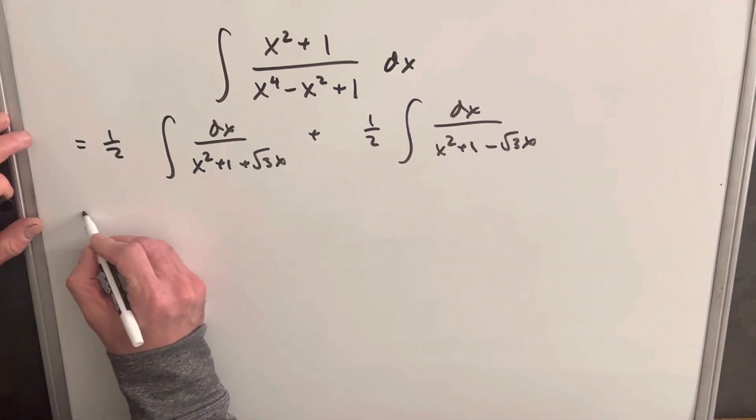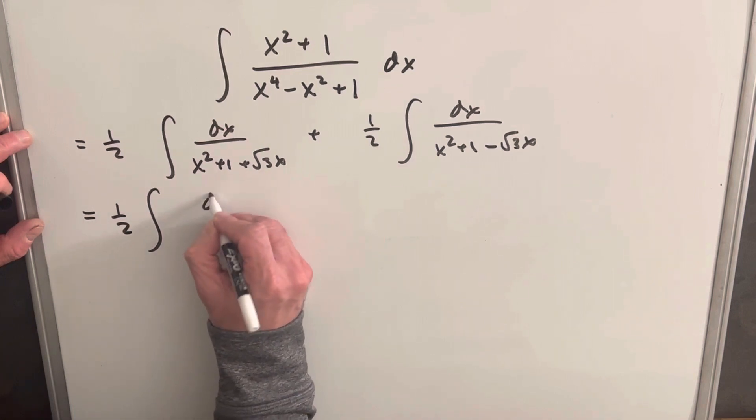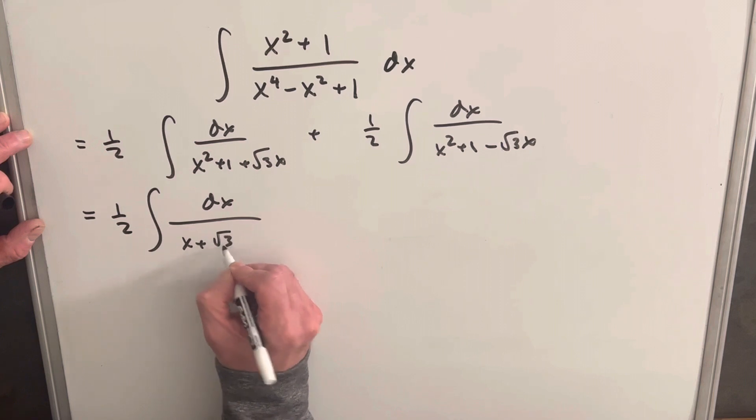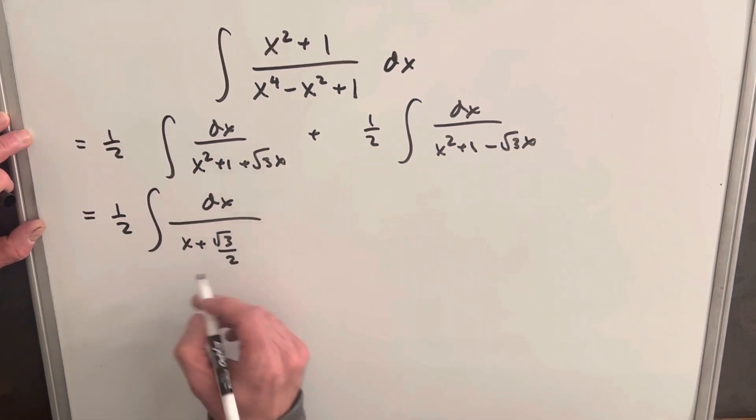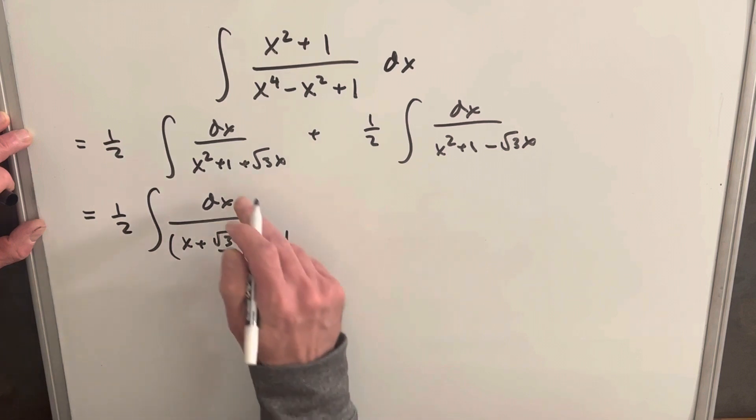So from here, what I'm going to do is I'm going to complete the square on each of these integrals. So for this one, I'm going to write this as x plus square root of 3 over 2. I'm just taking a half, divide by 2 there. Square this, so that's going to be x squared plus square root of 3x plus 3 fourths. And we square this last term, it's 3 fourths, so we need another 1 fourth to get us to 1.